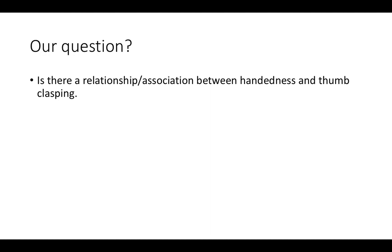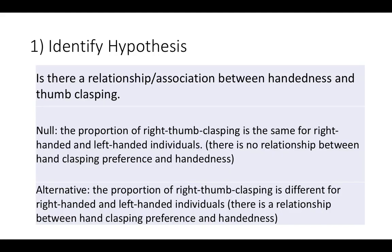What that means is, if for example you are right-handed, are you more likely to have a right thumb sitting on top of your left? Or if you are right-handed, are you more likely to have your left thumb sitting on top? So we need to come up with a question, which we have: is there a relationship or an association between handedness and thumb clasping?